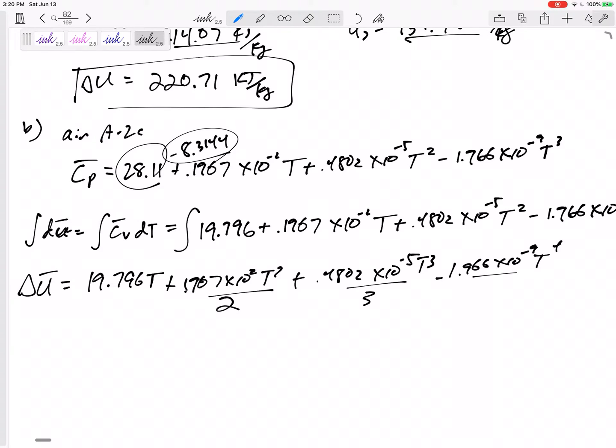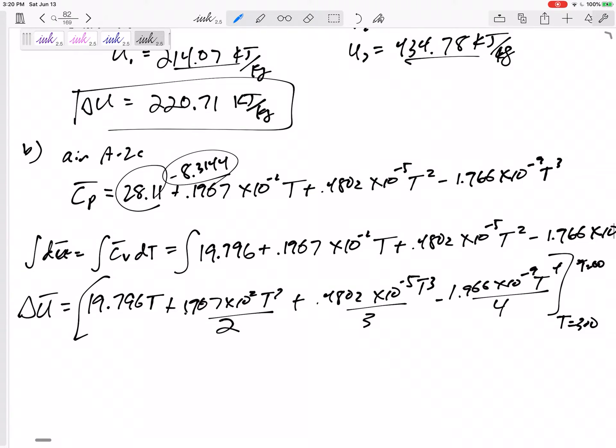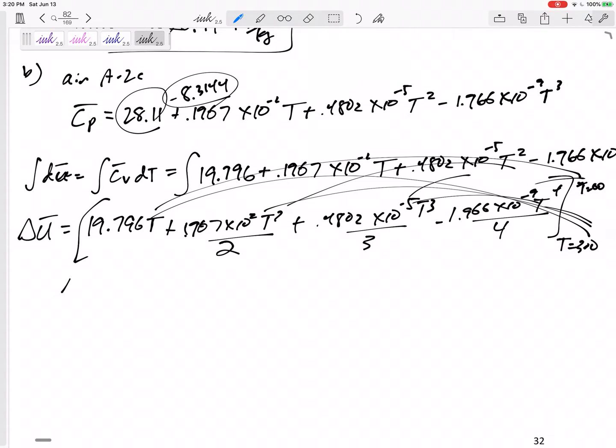And I'm going to plug in 600, and I'm going to plug in 300. I'm going to plug in 600 here, here, here, here, and subtract plugging in 300 here, here, here. A lot of math to get delta U bar, 6447 kilojoules per kilomole.